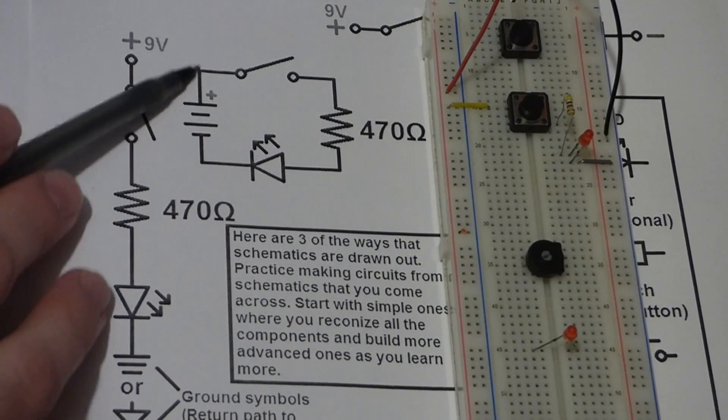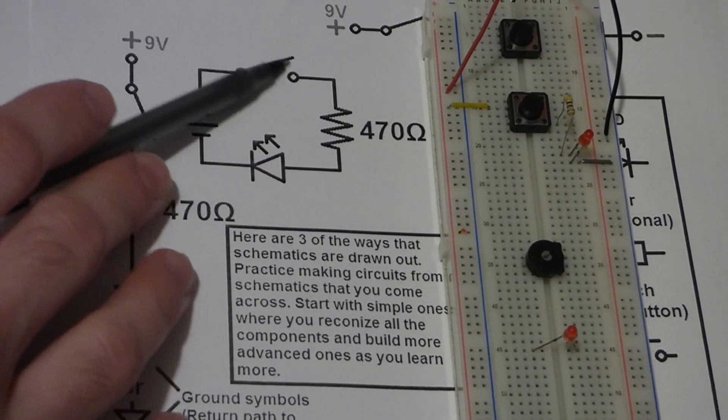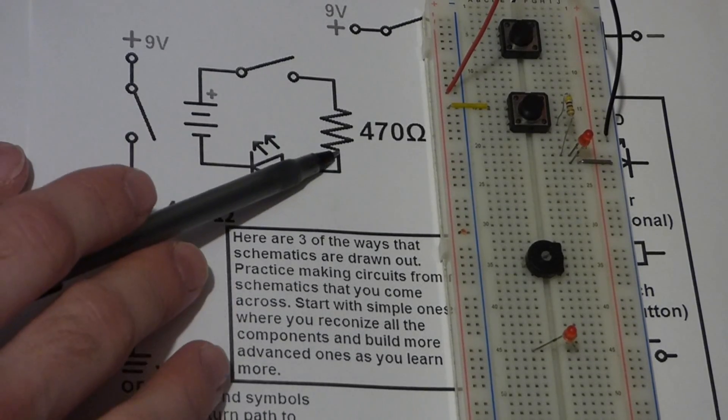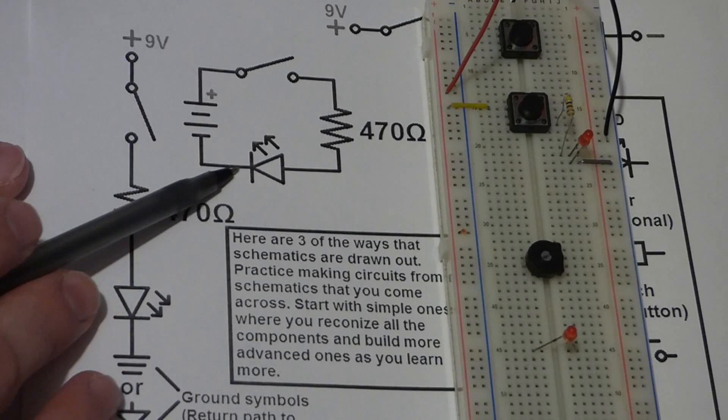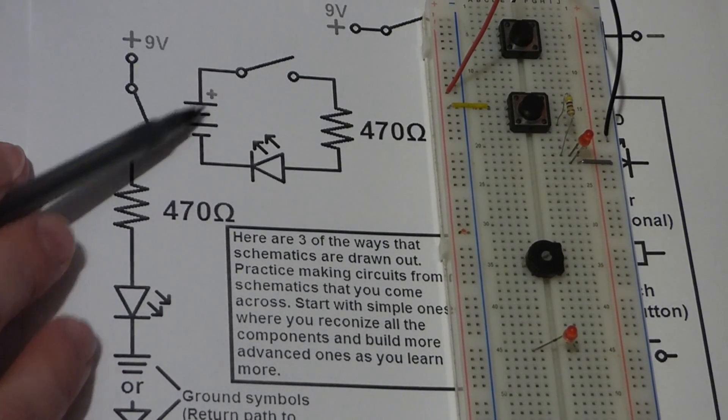I forgot to add that. But again we have a switch here which is open now but if we close it there will be a current path to the resistor and then to the LED and back to the battery.